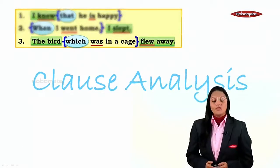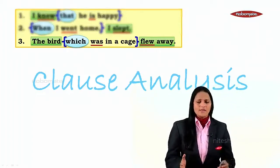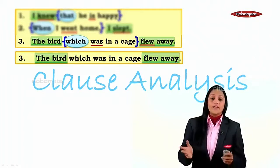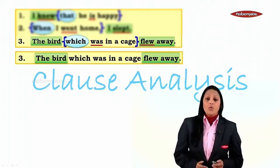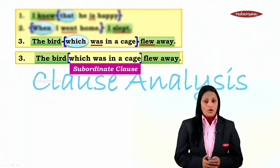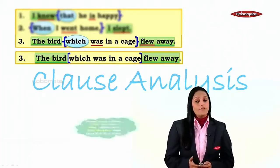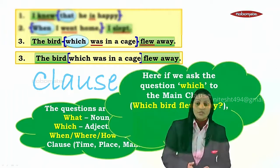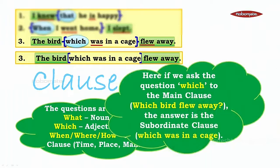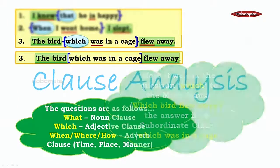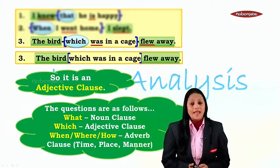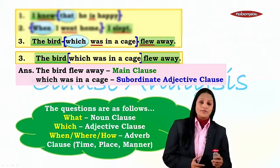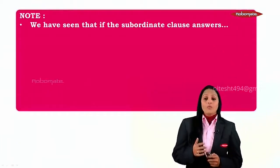Next: 'The bird which was in a cage flew away.' Following the steps, the main clause is 'the bird flew away' and the subordinate clause is 'which was in the cage.' From our questions — what, which, when, where, how — the question that suits here is 'which.' We ask: which bird flew away? The answer is 'which was in the cage.' Because it answers the question 'which', it is clearly an adjective clause. Answer: 'the bird flew away' — main clause; 'which was in a cage' — subordinate adjective clause.